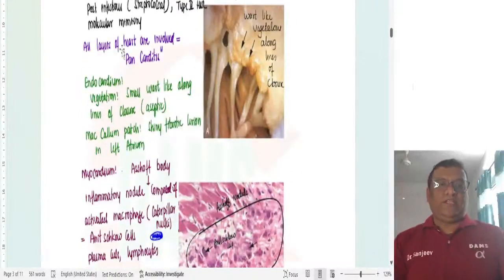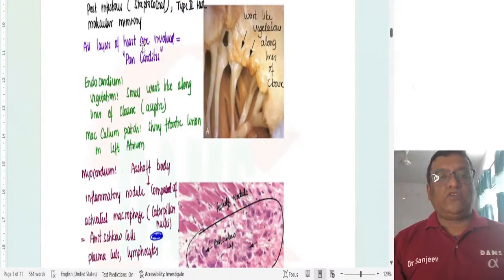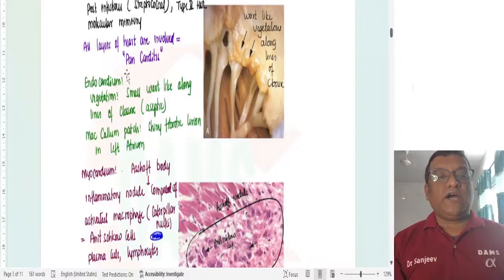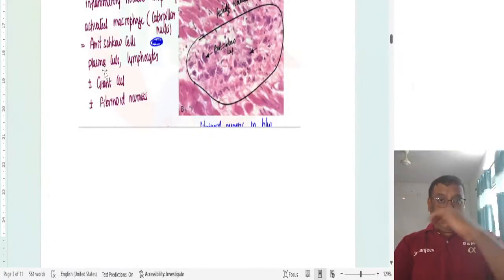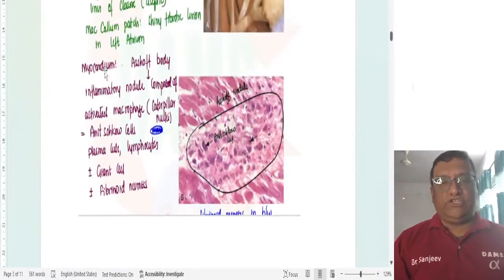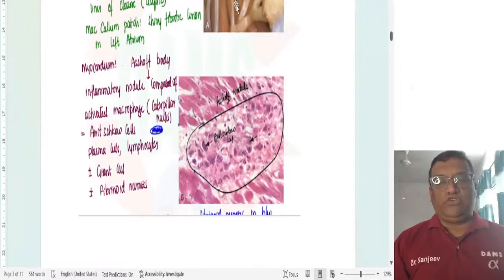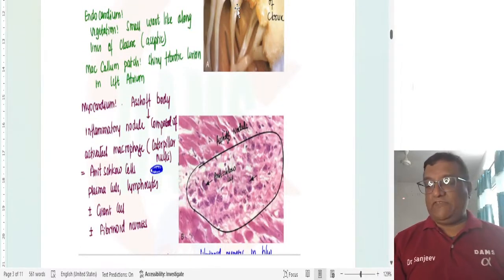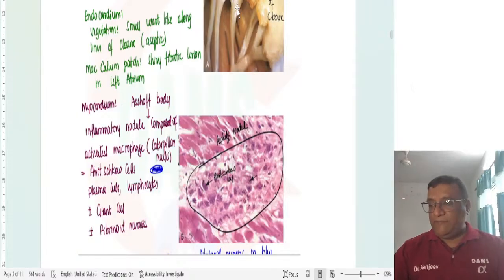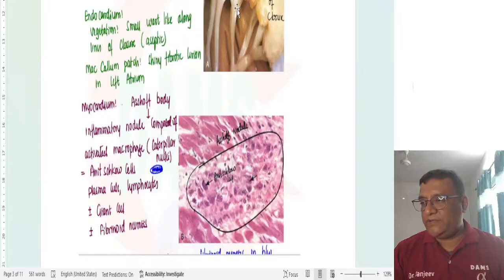Look at this. First thing that we had discussed it causes involvement of all the layers of the heart, that is what is called pancarditis and we discussed endocardium, myocardium and pericardial involvement, all three layer involvement separately. Aschoff nodule, endocardial involvement will show vegetation, pericardium will show bread and butter pericarditis, fibrinous pericarditis. That is what we had discussed.